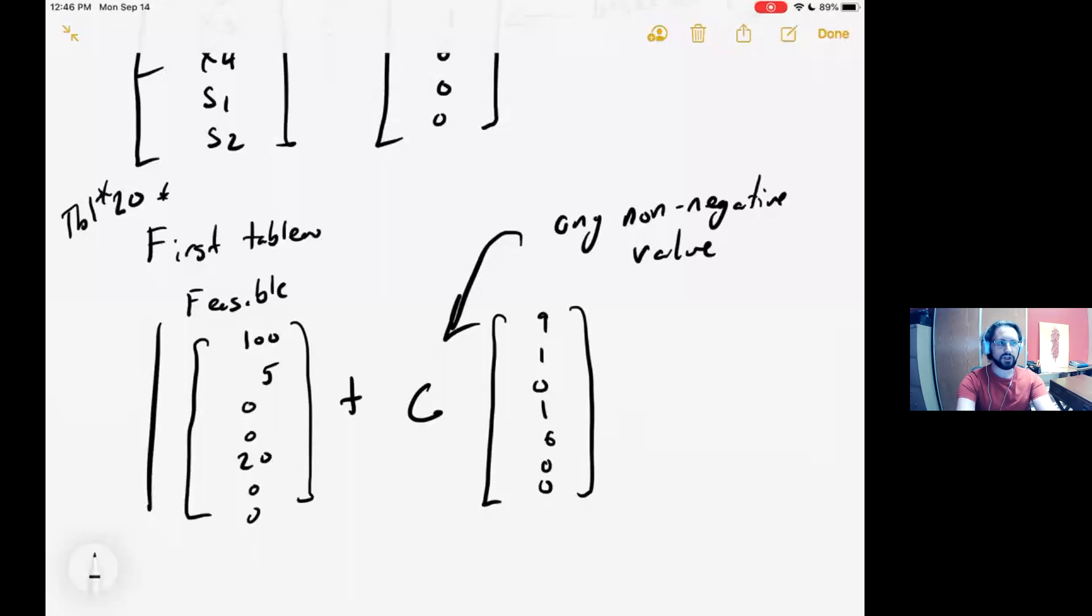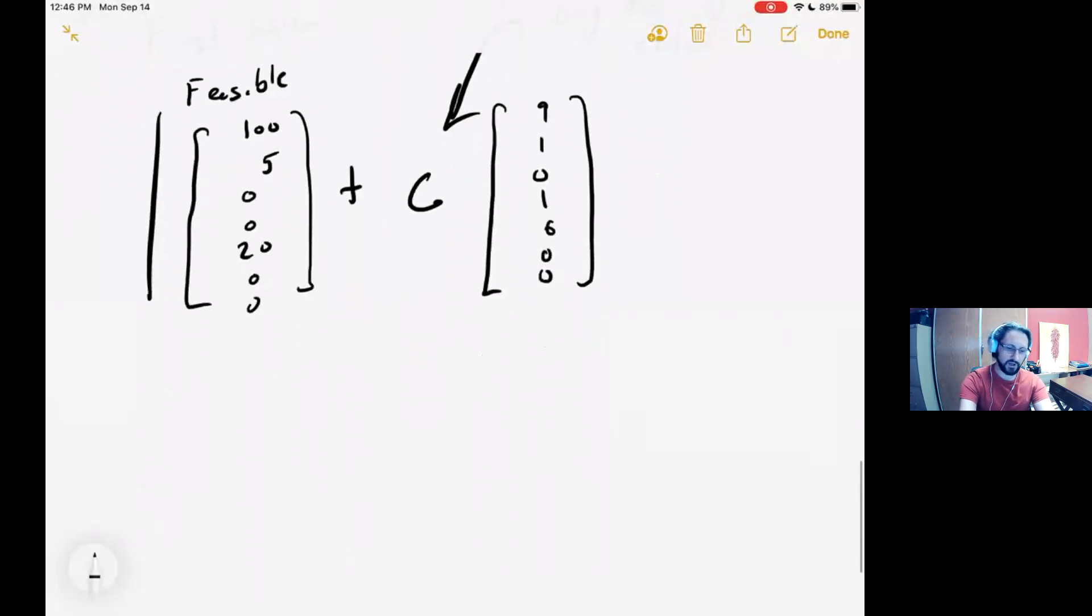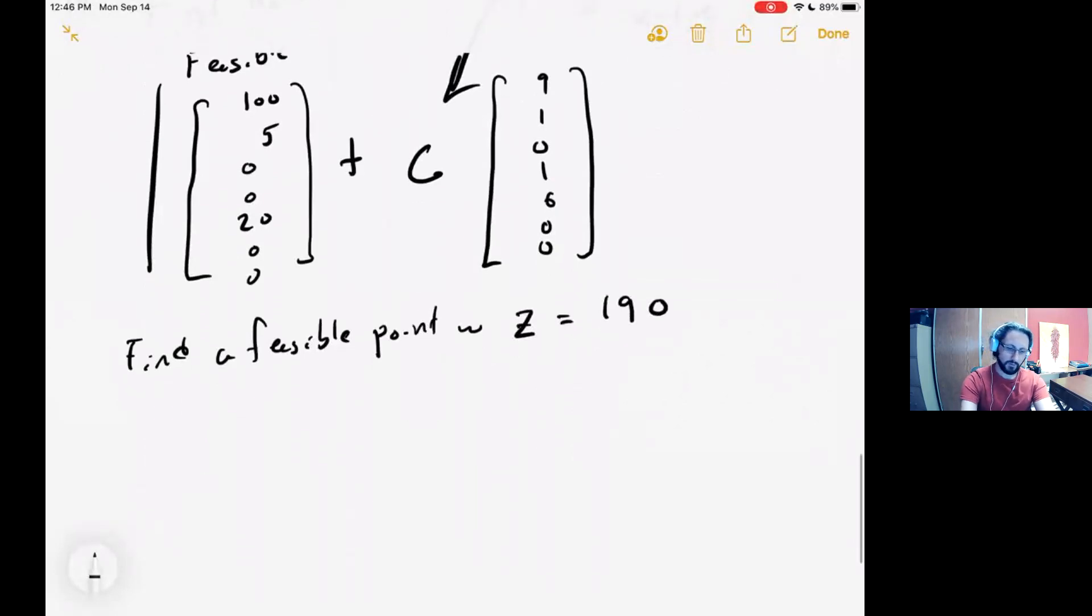Quick demonstration on how something would actually apply here. Find a feasible point with an objective value Z equal to 190. So I'm going to take this equation, that's a matrix equation, and I'm going to rewrite it in terms of its Z component. The Z component looks like 100 plus 9C. I want to make this equal 190, and I think we're all confident enough to say that this forces C to equal 10.